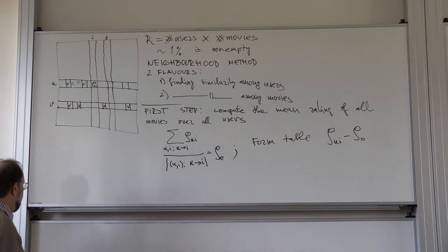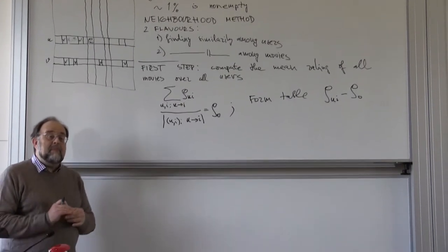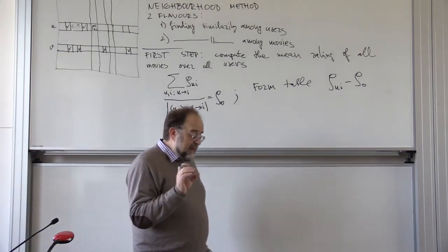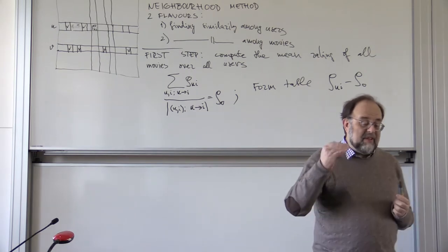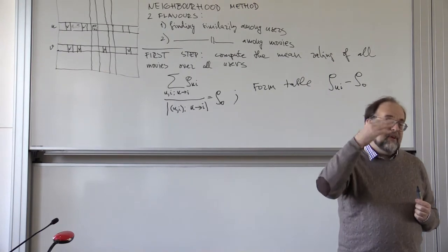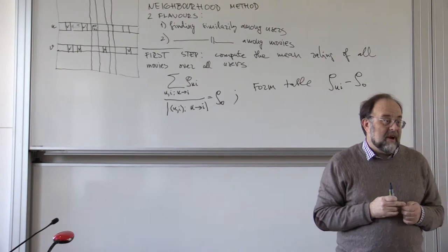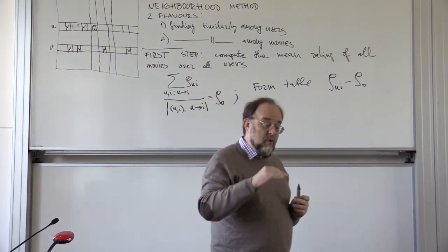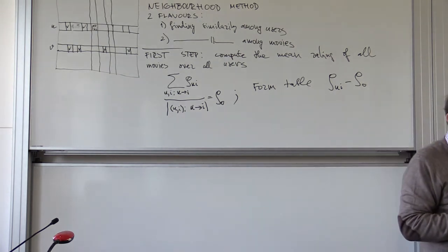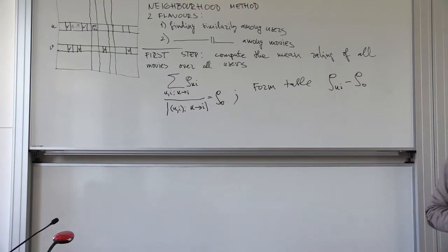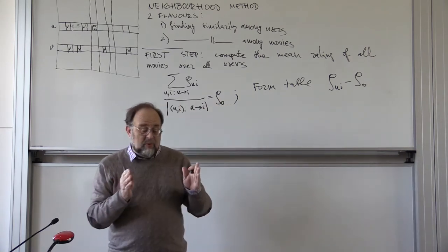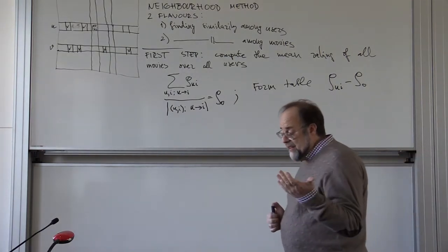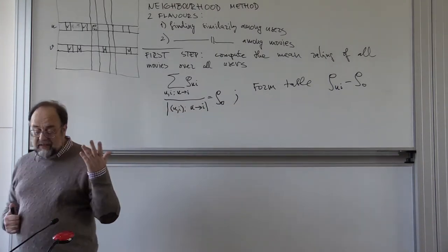The next step is removing the individual bias of users and individual bias of movies. A systematic bias of a user means that they tend to give, for example, all movies higher marks — say between three and five — so their mean would be large. Other users might be very critical, so their mean of all marks might be smaller. We want to compare relative qualities of movies — whether a user likes one movie better than another — rather than on an absolute scale.